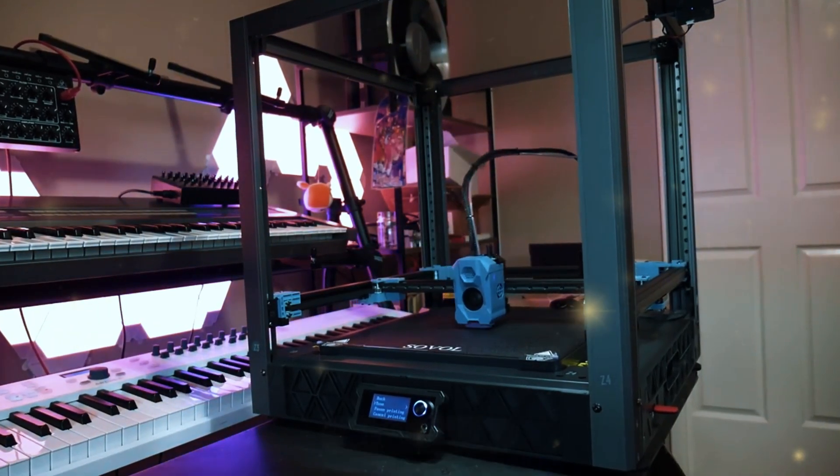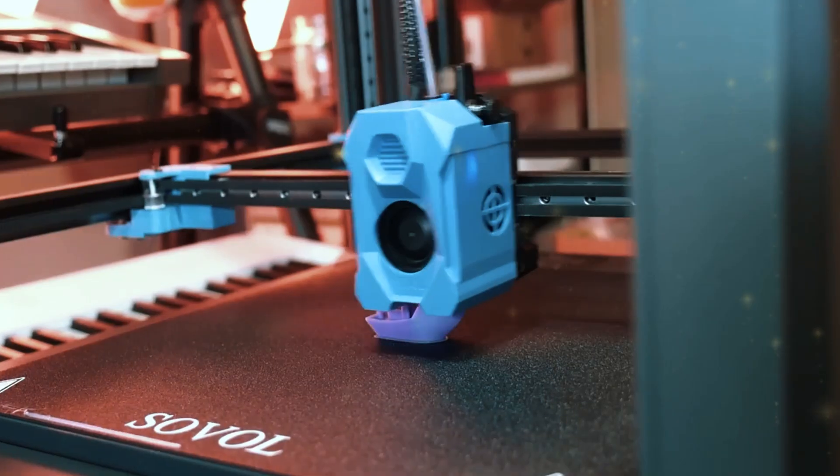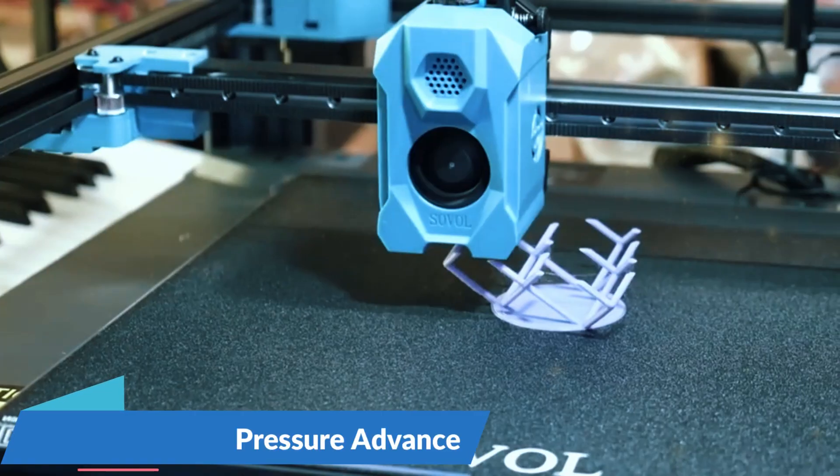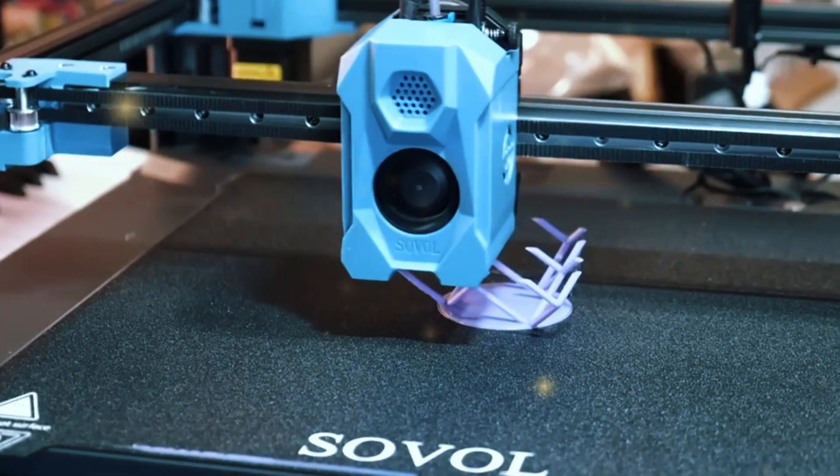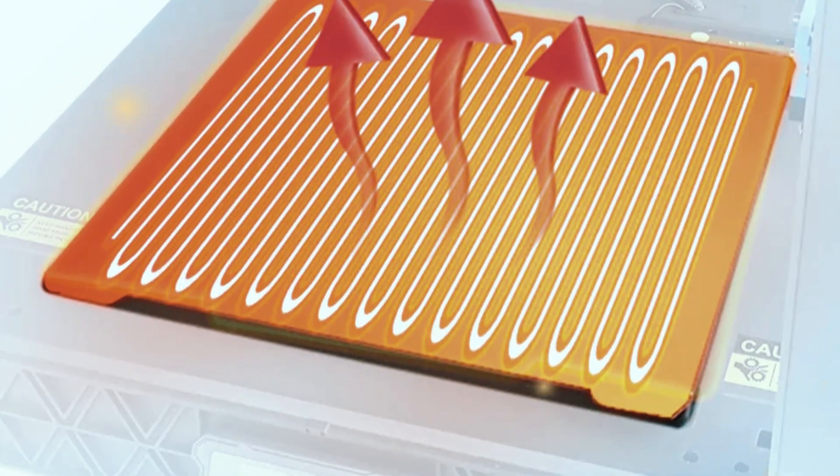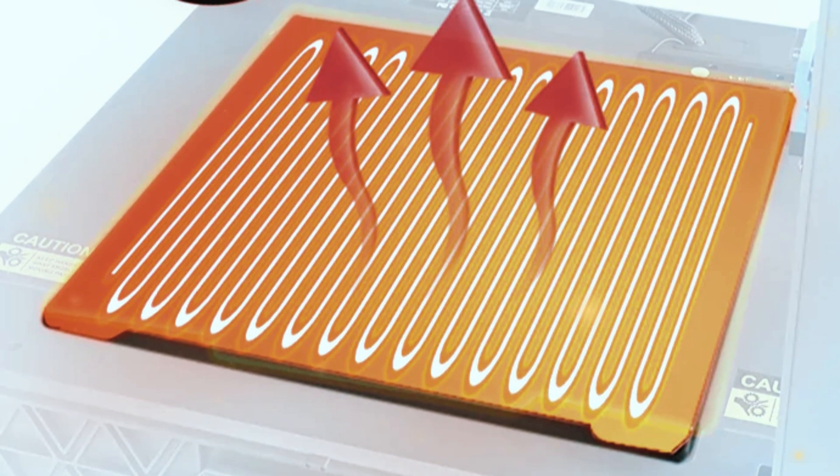Additionally, the printer's Clipper firmware further boosts its speed and accuracy. With features like input shaping and pressure advance, it reduces common issues like vibrations and uneven filament flow, ensuring flawless results.